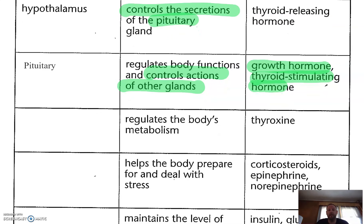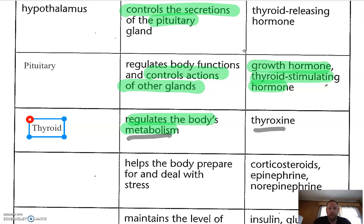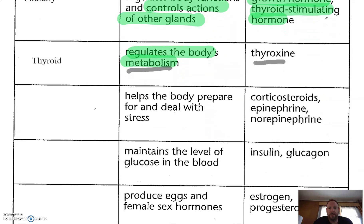Moving down, let's take a look here. This one regulates the body's metabolism. We have to remember metabolism refers to balance — the use of all the nutrients and the chemical balances like cell respiration. What I like to look at is that thyroxin sounds a lot like thyroid. That's how you remember it: thyroxin, thyroid. Scientists kept this one easy, so just remember the connection between thyroxin and the thyroid gland.